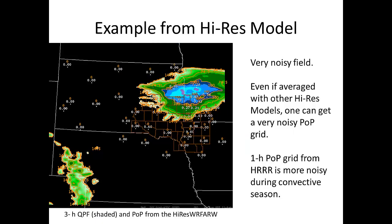When you go to the high-res model, you end up with a much more noisy field. Now this is actually fairly clean because it was a relatively organized system, and it's 3-hour QPF. This is from the high-res WRF ARW. At the edges you end up with very tight gradients and these fingers that come out from the area of precipitation. In western Nebraska you can actually see small bullseyes of precipitation. Now if you go to the HRRR and do the one-hour POP, it's even worse, especially in a relatively weakly forced convective environment, where you end up with small bullseyes of POP over time because the QPF ends up being very showery or intermittent across the area.